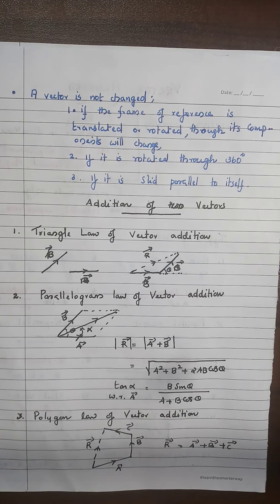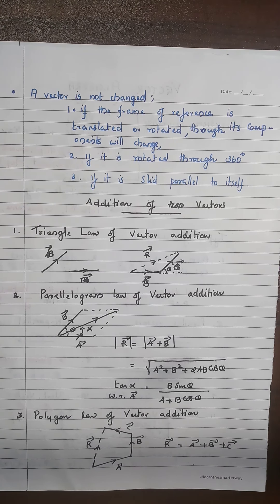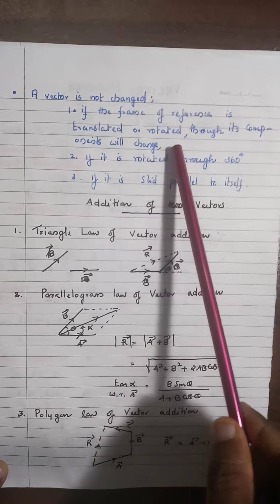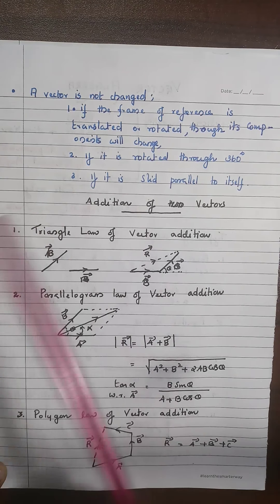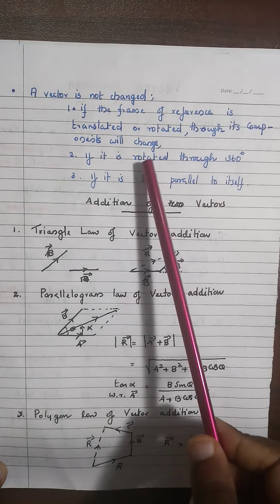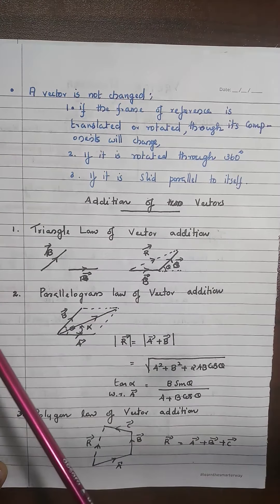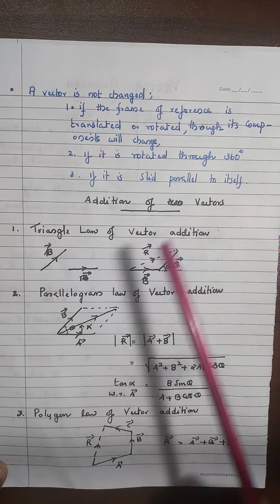A very important concept: in what situations is a vector not changed? Keep in mind — if the frame of reference is translated or rotated, the vector is not changed, but its components may change. Also, a vector is unchanged if it is rotated through 360 degrees or if it is slid parallel to itself.